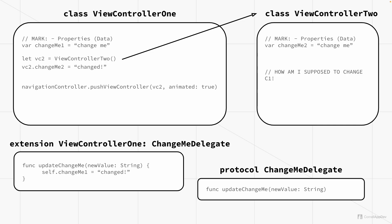Now the bartender knows what to do. But first we actually have to give the customer the menu. We create a new property in view controller two that's the delegate — a changeMeDelegate. Then here we set the delegate equal to self. Because we extended and implemented this changeMeDelegate, this class is a changeMeDelegate now. So we can say the delegate is equal to self.